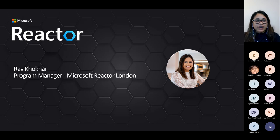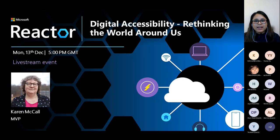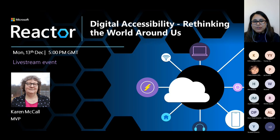My name is Ravneet and I'm the Program Manager at Reactor London. You can find all our upcoming events on the Microsoft Reactor website or our meetup groups. All the links to our platforms will be displayed on the screen before the end of the session. Please take a moment to read our code of conduct. We are all here to learn so please be respectful of other people's views and be kind and considerate in the way you engage. Today's episode is on digital accessibility with Karen. Karen is the owner of Carlin Communications and has been providing a leadership role for over 20 years in the field of digital accessibility.